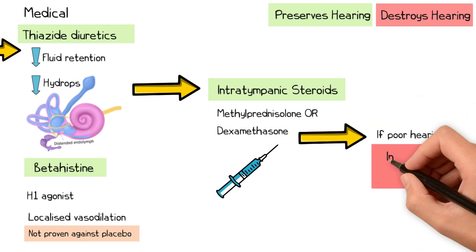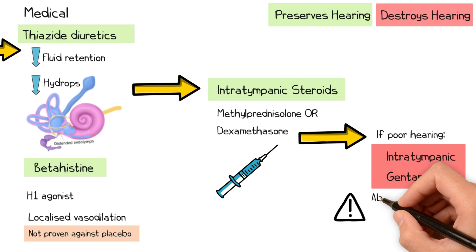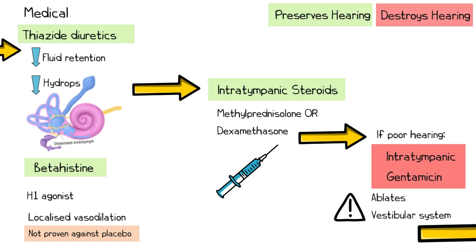For patients with poor hearing, intratympanic gentamicin can be used. This preferentially ablates the vestibular system, but should be reserved to cases where there is poor residual hearing.